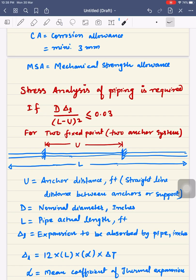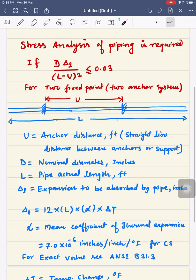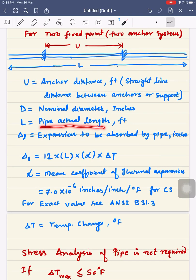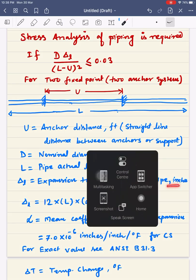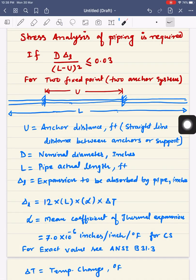D is nominal diameter in inches, L is the actual pipe length in feet, and delta L is expansion to be absorbed by pipe in inches. If it is supported at two places, it will expand either this way or that way.